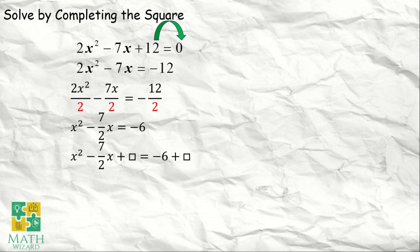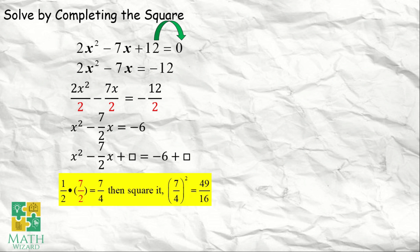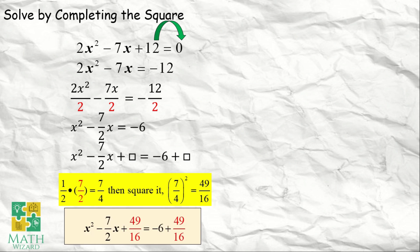Ang sunod na step, we need to find out what number should be added to both sides of the equation. Ang gagawin natin, yung 7 half — yung coefficient ng x — i-multiply natin sa 1 half and then we are going to square it. So, 1 half times 7 half becomes 7 over 4. Then square it, it becomes 49 over 16. So, 49 over 16 ang ia-add natin sa both sides ng equation. This becomes x squared minus 7 half x plus 49 over 16 is equal to negative 6 plus 49 over 16.